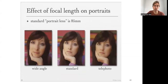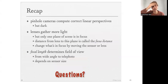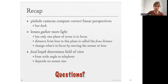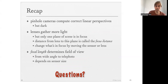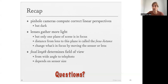When trying to extract 3D from images, you need to think about how the image was formed. To recap: pinhole cameras compute correct linear perspective but don't gather enough light. Lenses gather more light but only one plane of the scene is in focus. The distance from the lens to this plane is called the focus distance. You change what's in focus by moving the sensor or changing the focal length. The focal length is a physical property of the lens determining the field of view from wide angle to telephoto, and the field of view also depends on sensor size.